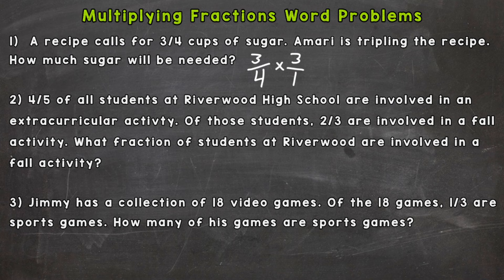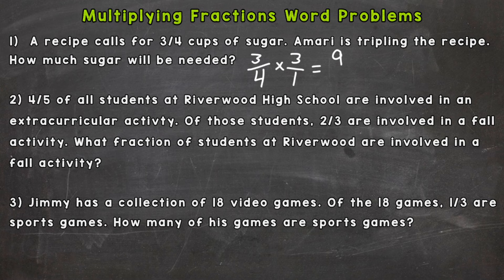That way, I have a numerator and a denominator. A whole number over one as a fraction is still worth that whole number — I'm not changing the value of the three, I'm just giving it a top and a bottom. That way, I can multiply these fractions straight across. So three times three is nine, and four times one is four.